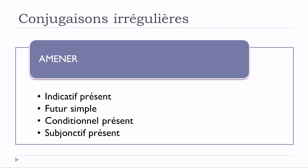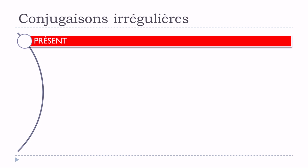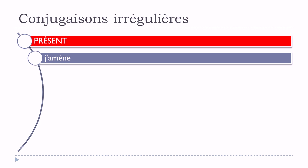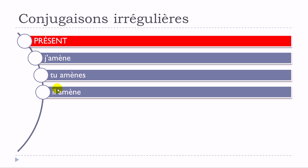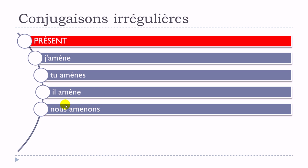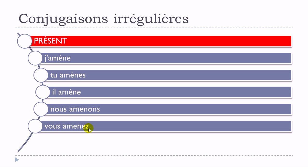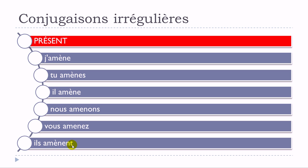Let's start with le présent. It goes like: j'amène, tu amènes, il amène, nous amenons, vous amenez, ils amènent. We can see that je, tu, il, and ils are concerned by this little change.